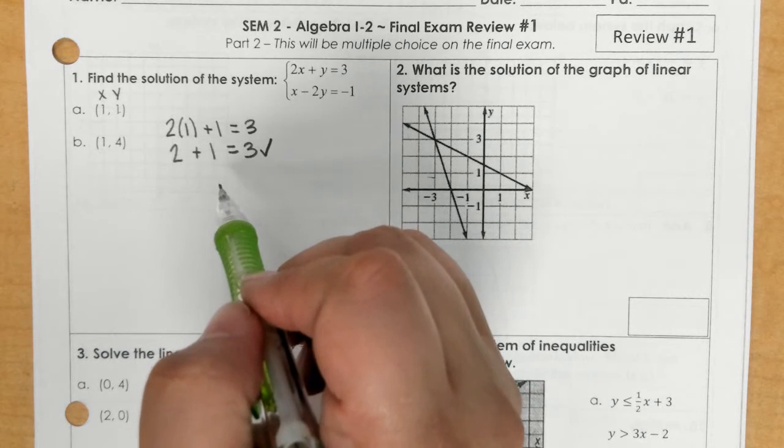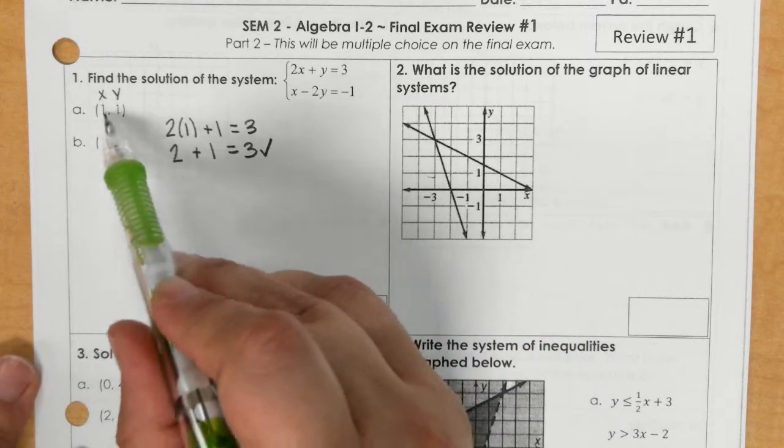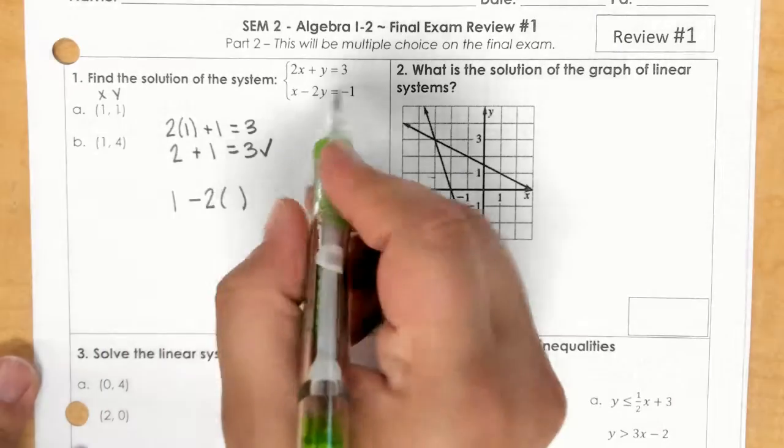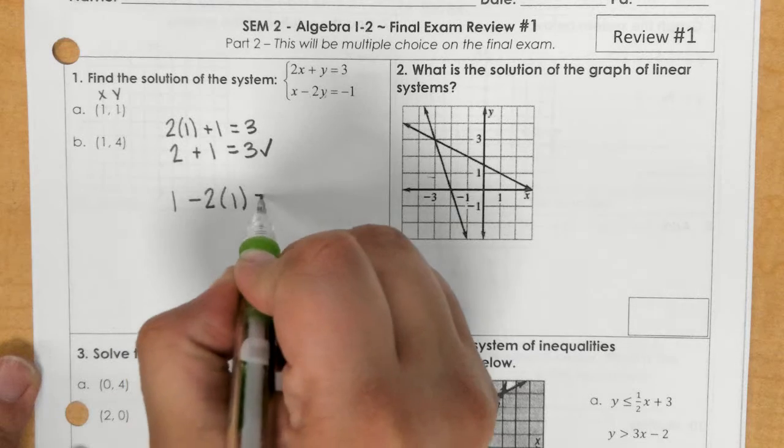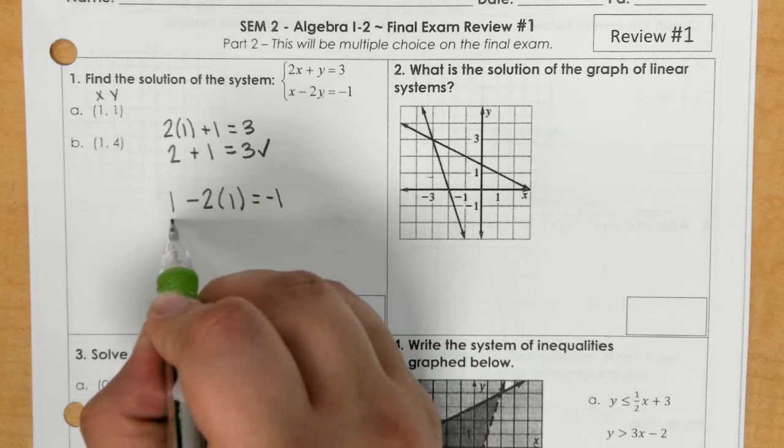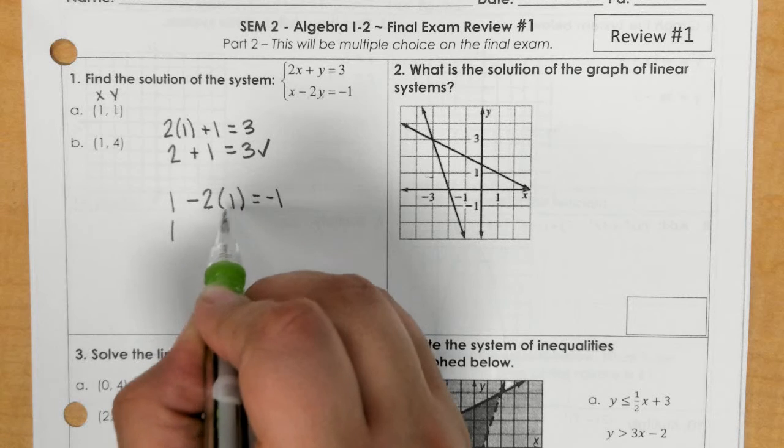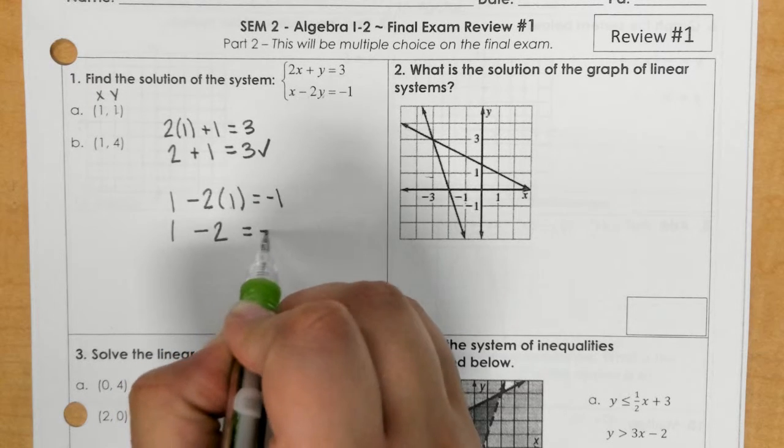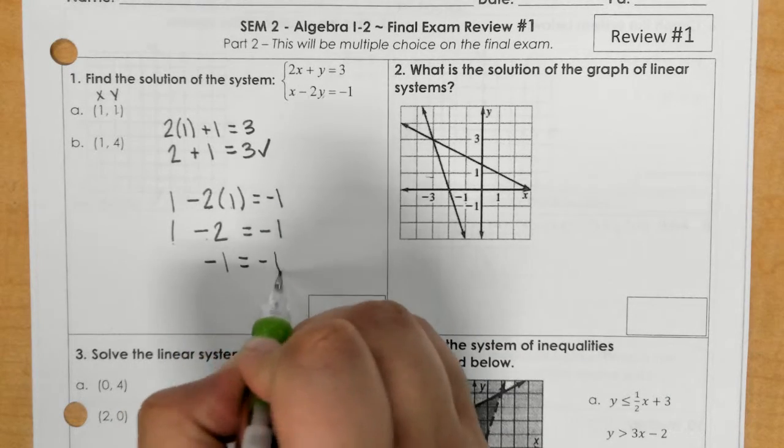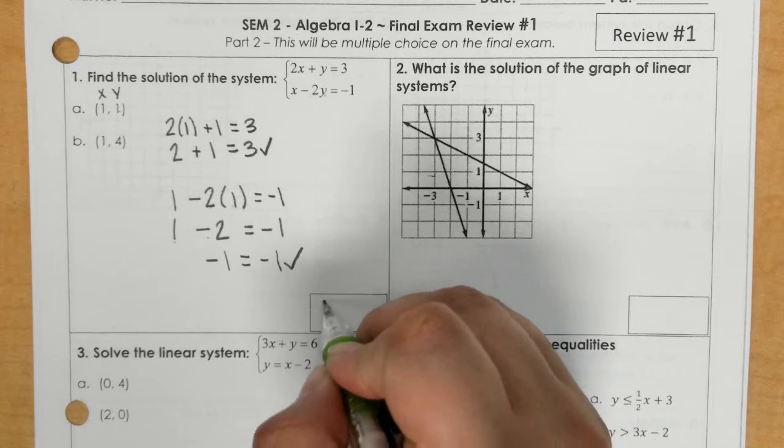But you have to make it work in both. So I'm going to plug that into the second equation and try it. So 1 goes into x minus 2 times y. y is also 1 equals negative 1. So we're going to work this out and see if it equals negative 1. So I bring my 1 down. Negative 2 times 1 is negative 2. And 1 times negative 2 is negative 1. So in that case, it is correct. It is 1, 1.